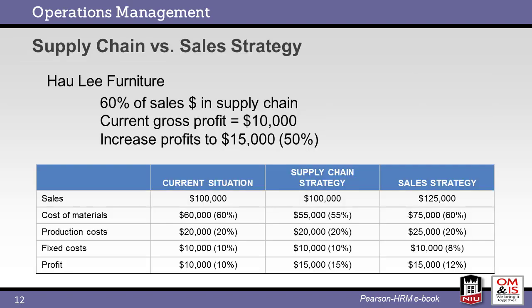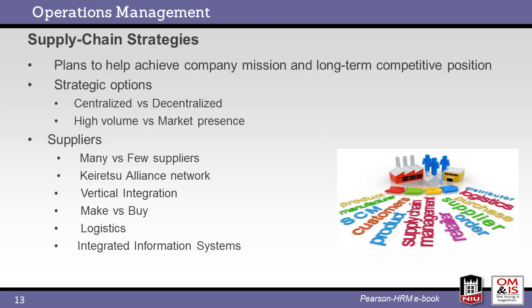Here we see an example of a furniture store considering three different strategies. In this case, the supply chain strategy generates the highest profit for a given sales level. The supply chain strategy must be in alignment with the organization's core mission. At the high level, the supply chain strategy can be centralized or decentralized and vary based upon product volume. At the supplier level, we must decide how many suppliers will be considered, the level of vertical integration, and how we will handle logistics and integration of information systems to facilitate data sharing.